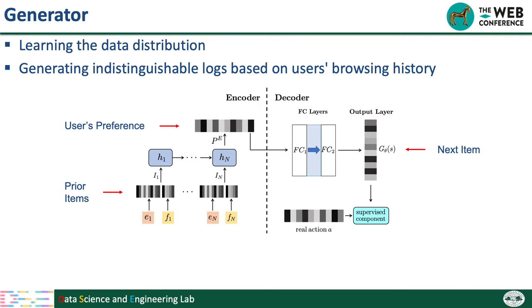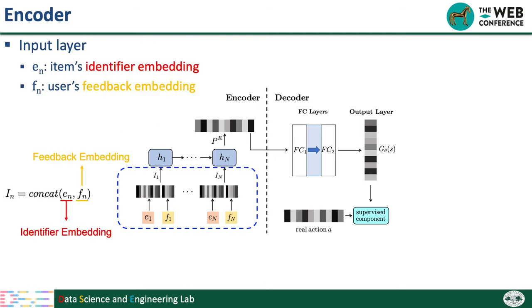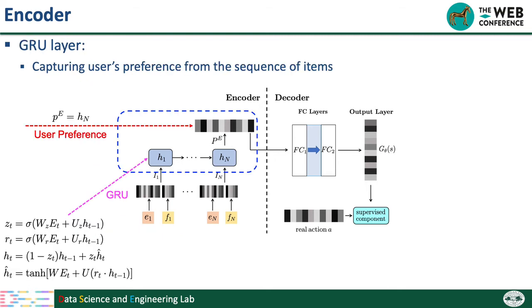The generator contains two parts: an encoder and a decoder. The encoder takes as input the previous items we have browsed, and outputs the embedding of the current user's preference. The inputs of the encoder are the information of the item sequence browsed — for each item, we have its identifier, which is unique for each item, and also the user's feedback, because we want to capture user's interest in the sequence. We transform this information into embeddings and concatenate them as the item embedding. Then we use a GRU layer to capture the user's dynamic preference from the sequence of items, and finally the encoder outputs the embedding of the user's current preference.